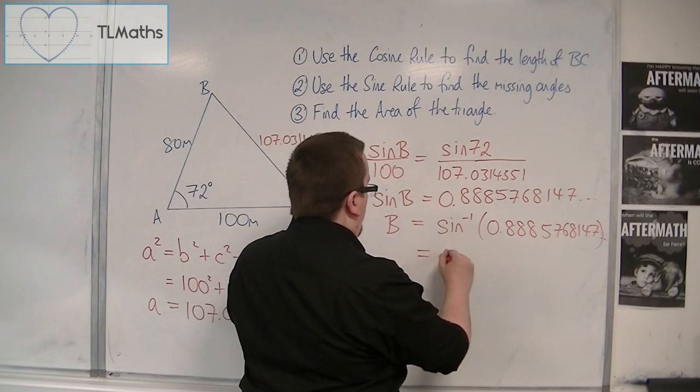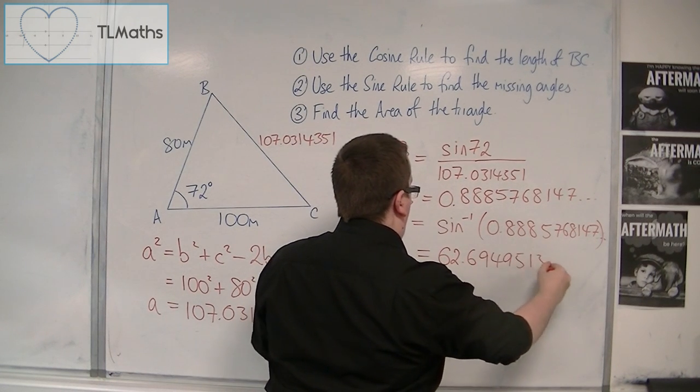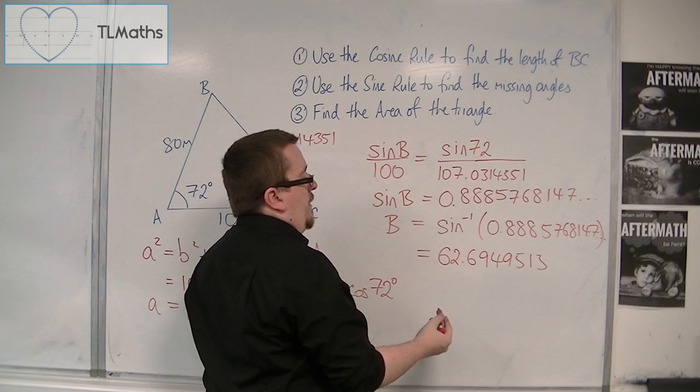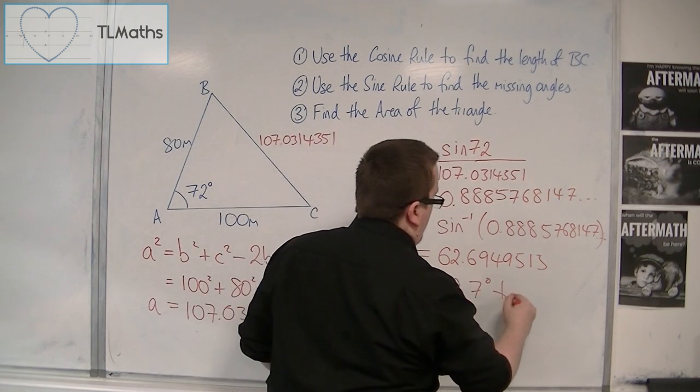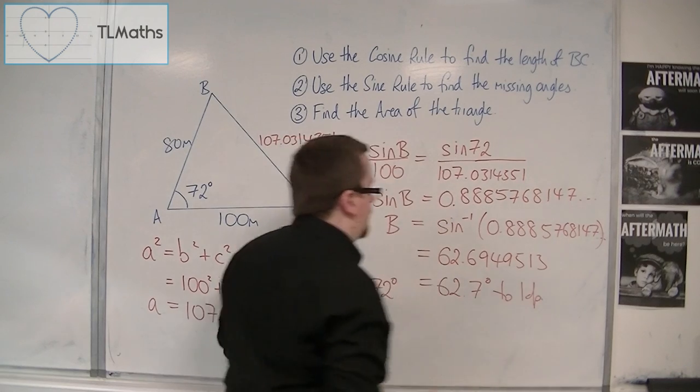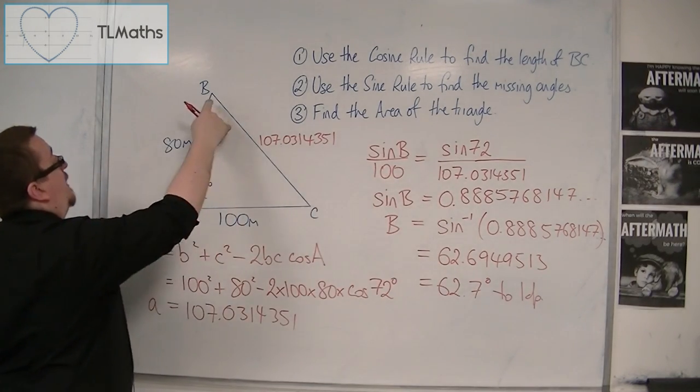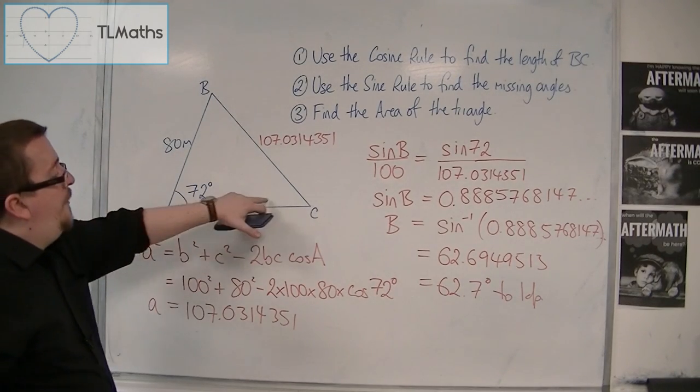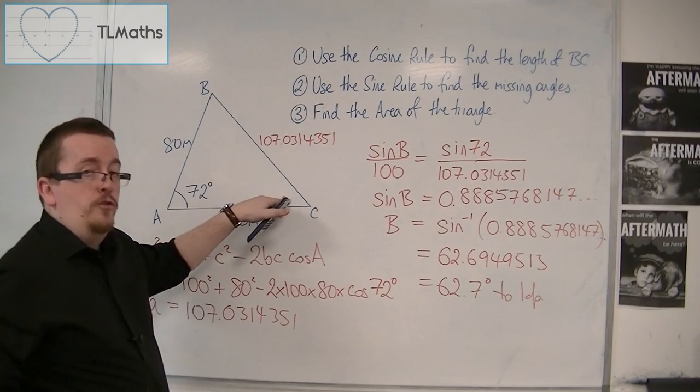And we get b is equal to 62.6949513. So, to one decimal place, this is 62.7 degrees. So, I now have b to one decimal place. And I can find c by subtracting these two angles from 180.